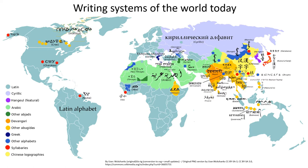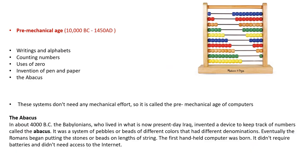As we saw earlier, ancient people used pebbles, hash marks on cave walls, or tied knots on ropes to record counting or measuring lengths. The ancient Mesopotamians invented the Abacus to keep track of counting numbers. This was a primitive device to perform simple mathematical calculations like addition and subtraction.